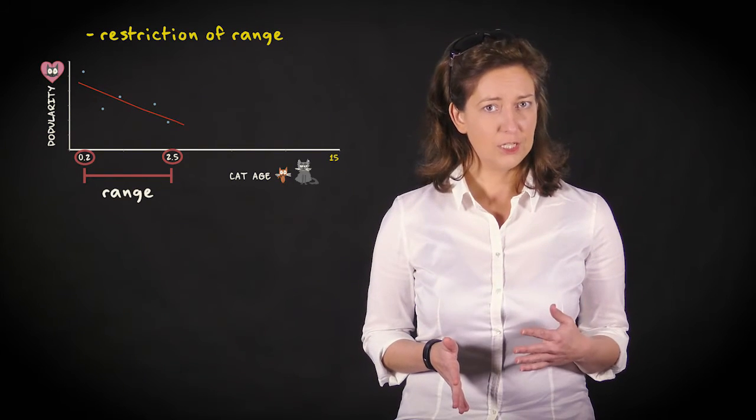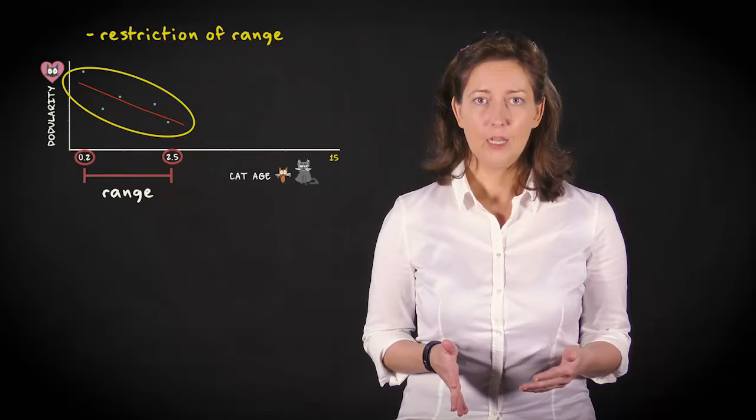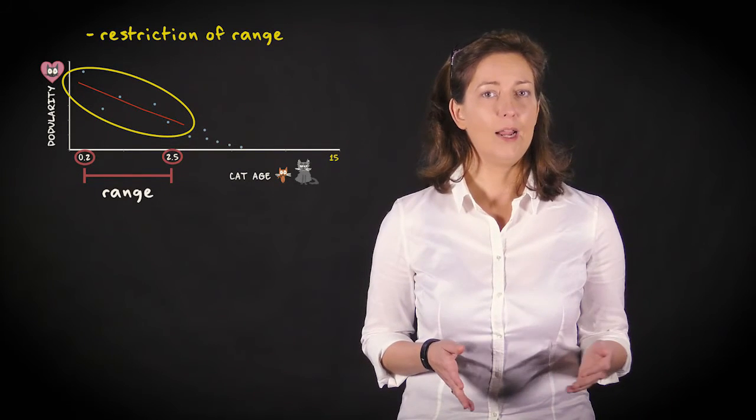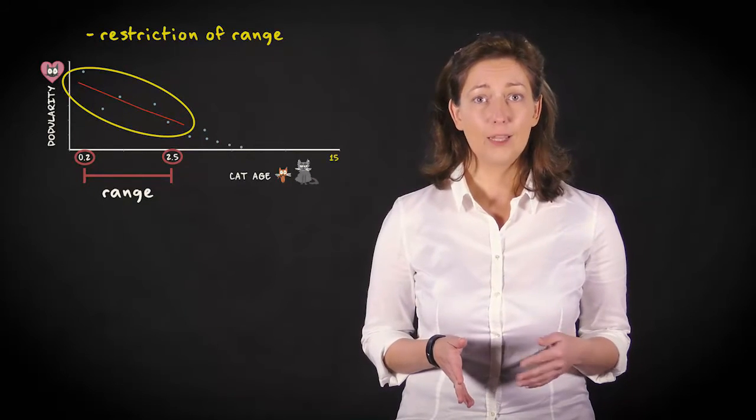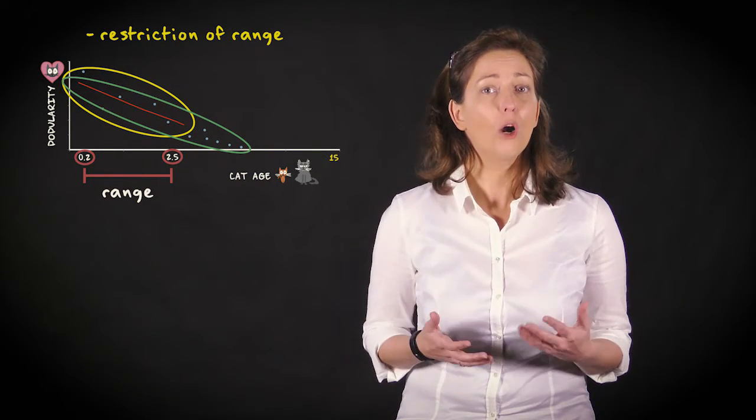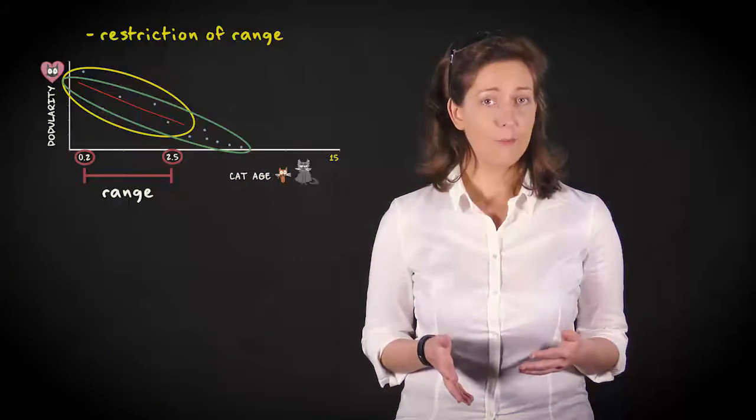The correlation in our sample is 0.7. If we had collected data in the missing range, assuming the linear relation continues to hold, the scatter plot would look like a cloud of data points that is more ellipse-shaped than the limited sample.